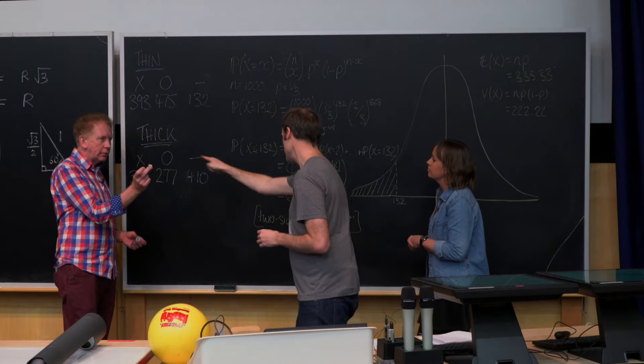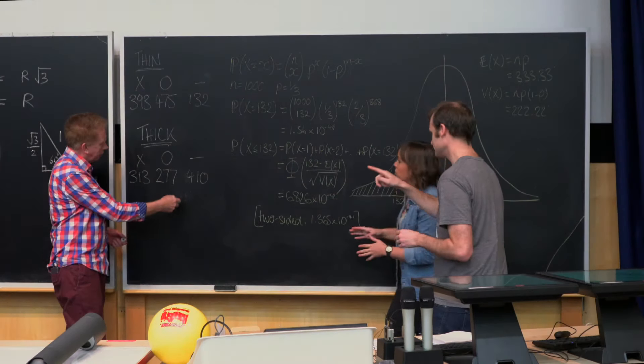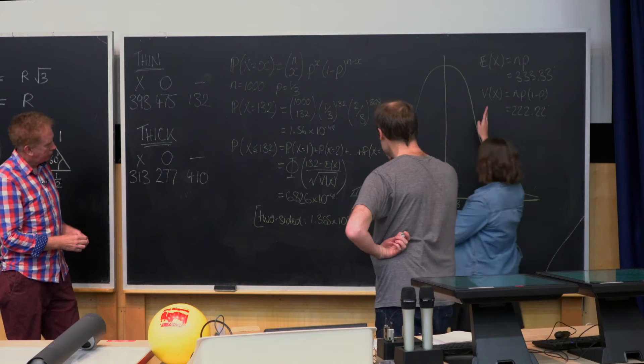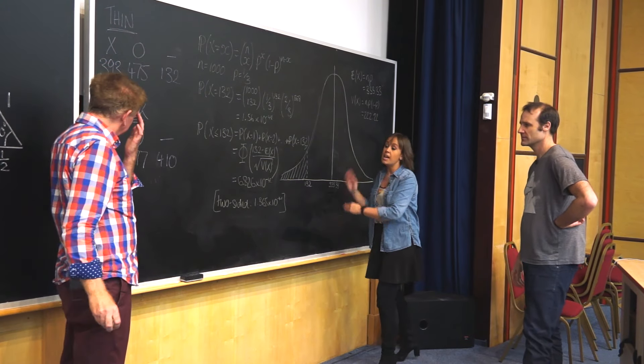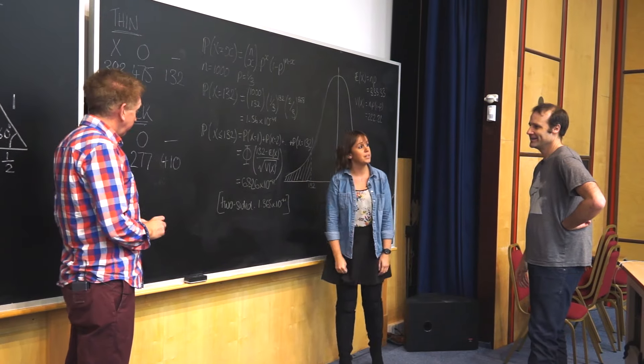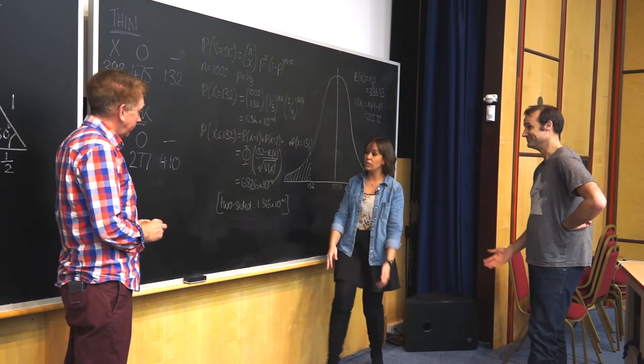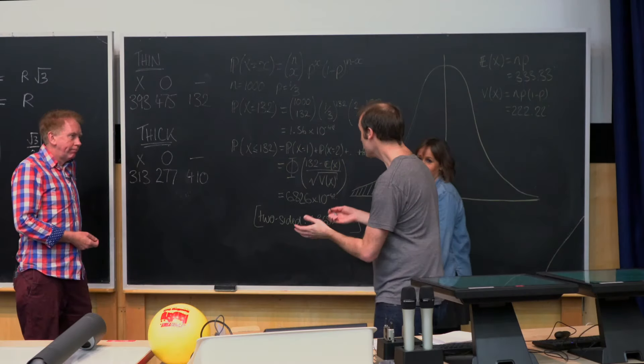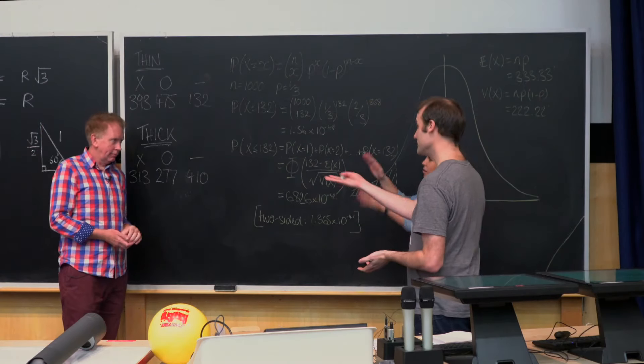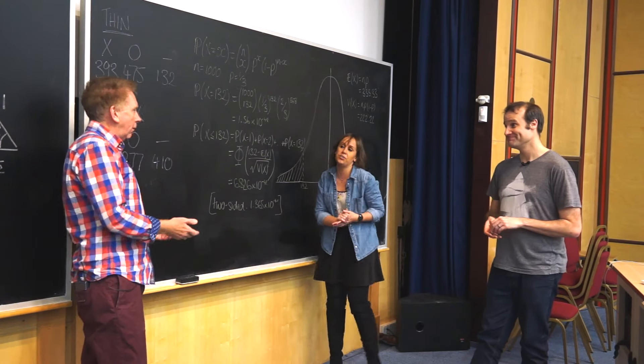And here we've gone to the thicker ones. The thicker ones, we did exactly the same thing, except we were over in this region and we were looking at being greater than 410. And again, we got a very small probability. They're both wrong. It looks like this one is too many and this one is too few. So we've got upper and lower bounds. Somewhere in between that is probably where you should be looking.